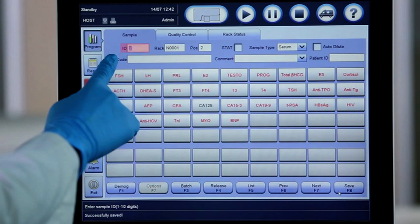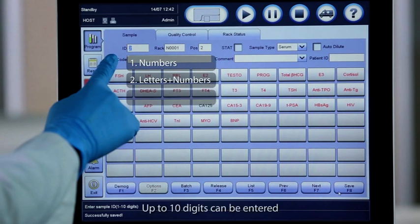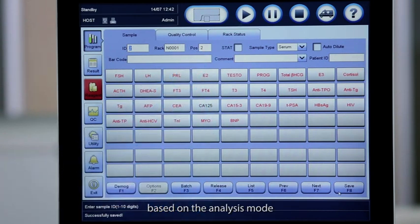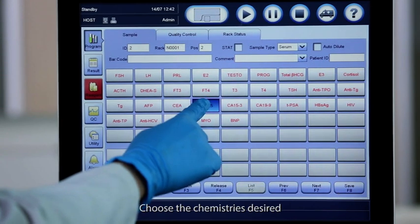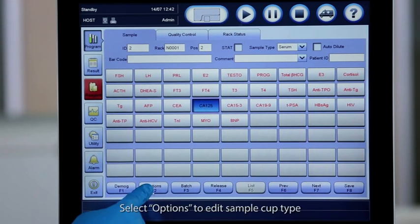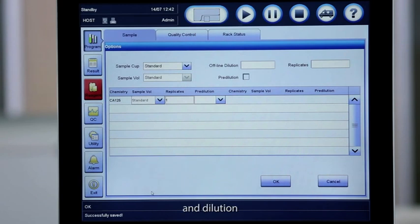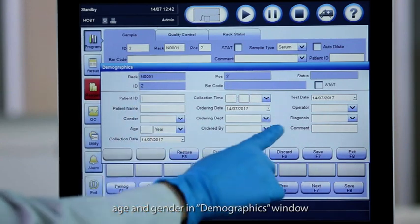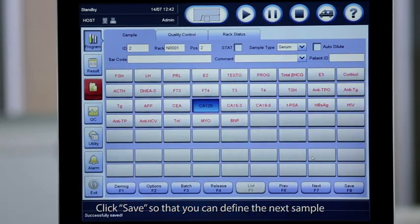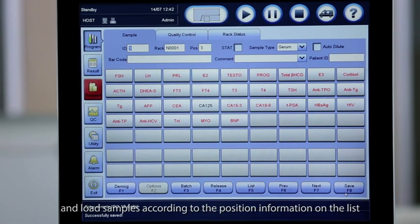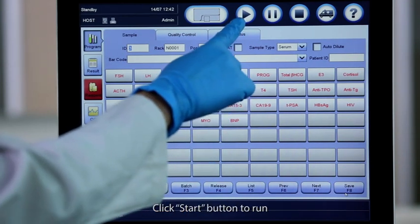Enter the sample ID. Sample ID is composed of numbers or letters and numbers. Up to 10 digits can be entered. Input the Rack ID and position number based on the analysis mode. Choose the chemistries desired. Only those in black can be requested for analysis. Select Options to edit sample cup type, replication and dilution. Edit patient information such as age and gender in Demographics window. Click Save so that you can define the next sample. Click List and load samples according to the position information on the list. Click Start button to run.